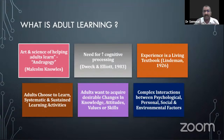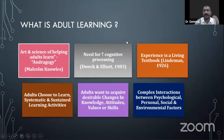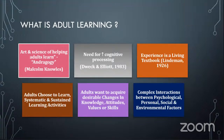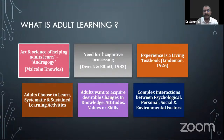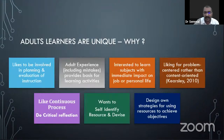Adults choose systematic and sustained learning activities. They want to acquire desirable change in their knowledge, attitude, values, and skills. They want a complex interaction between psychological, personal, social, and environmental factors. Teaching an adult is therefore different from teaching a child, and SDL is a very important mode of teaching adult learners.